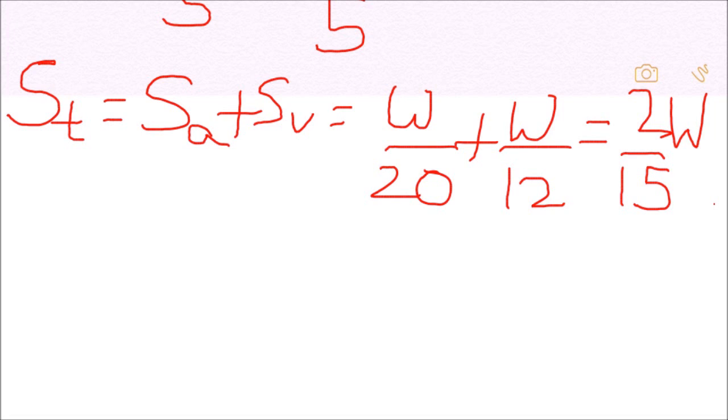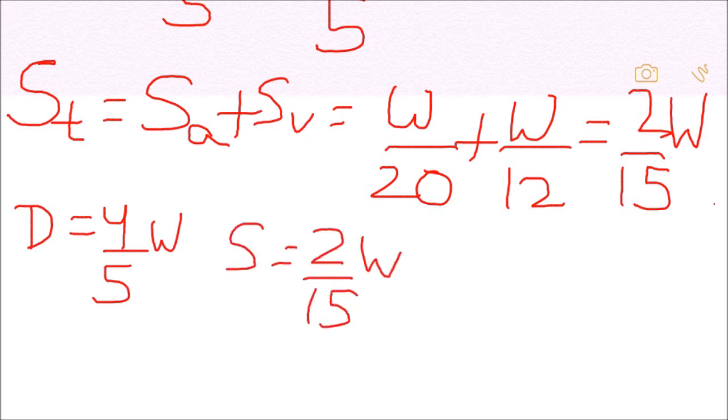Now we have the distance to be covered which is 4 by 5 times W and the speed which is 2 by 15 times W. The time taken by Ajay and Vijay can be easily calculated by the time and distance formula. The time becomes distance upon speed that is 4W by 5 upon 2W by 15 which is 6 days.